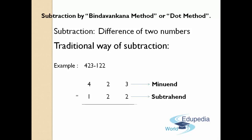Now we have to do the subtraction and see what difference we get by subtracting 423 and 122. So 3 minus 2, you will get 1. And 2 minus 2 you will get 0. And 4 minus 1 you will get 3. The answer you get when you subtract 423 and 122 is 301.